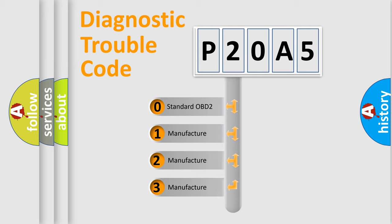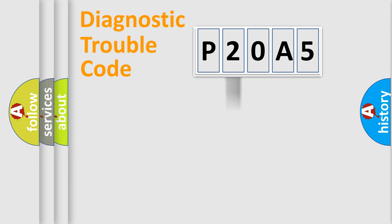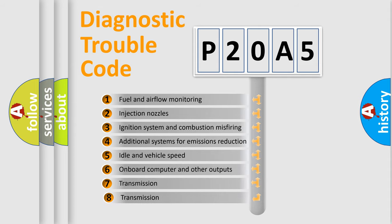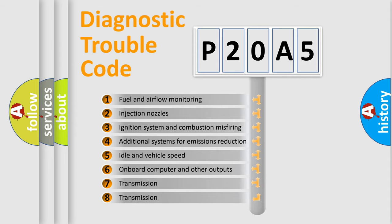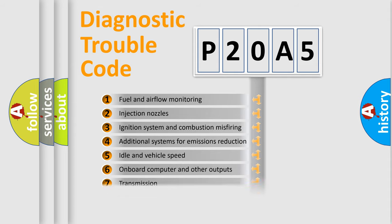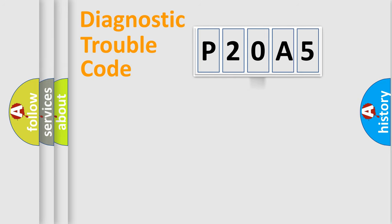If the second character is expressed as zero, it is a standardized error. In the case of numbers 1, 2, 3, it is a manufacturer-specific error expression. The third character specifies a subset of errors. The distribution shown is valid only for the standardized DTC code.